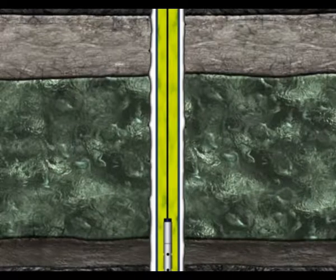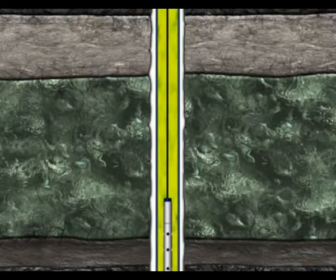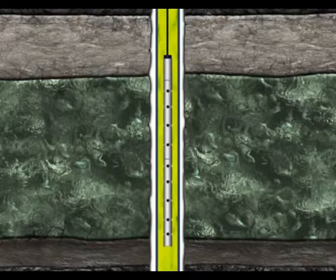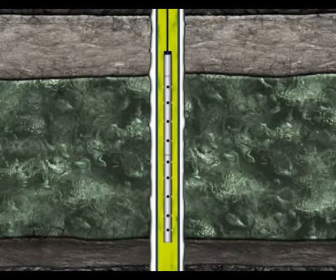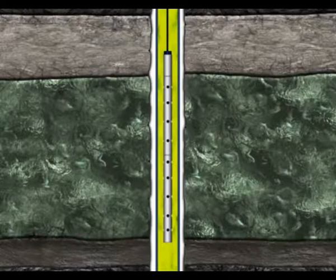Using sensors part of the gun string, the guns can be accurately positioned in front of the targeted reservoir. The charges in the gun are now ready to be ignited using the surface perforating control equipment. Once the correct depth has been confirmed, the gun is fired.